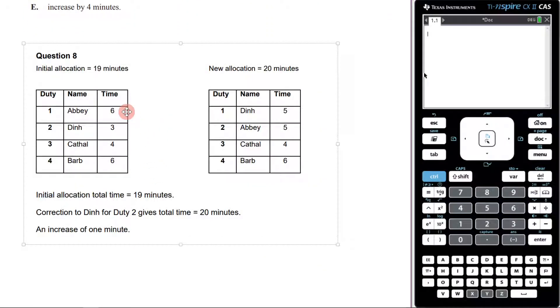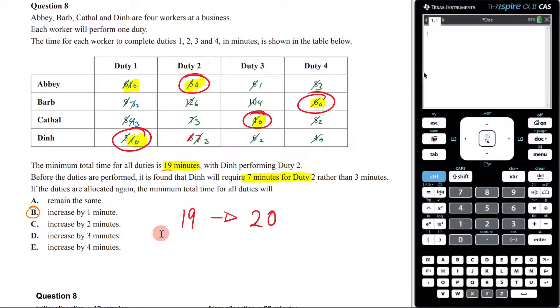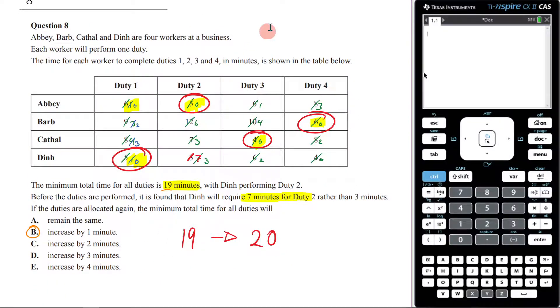If we look at our examiner's report here, you can just see that they've given us the initial allocation which was 19 minutes, the new allocation which is 20 minutes. The initial allocation was 19 minutes, correction to Dean for duty 2 gives the total time to 20 minutes, increase of one minute. And that's it, hopefully you found this helpful, bye.